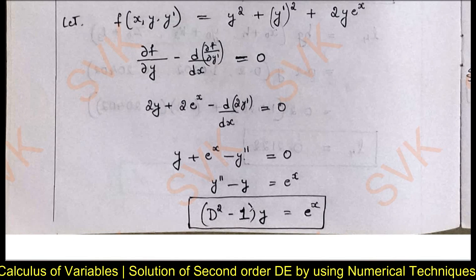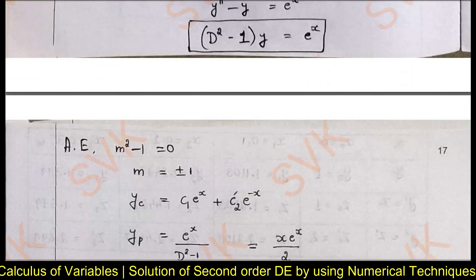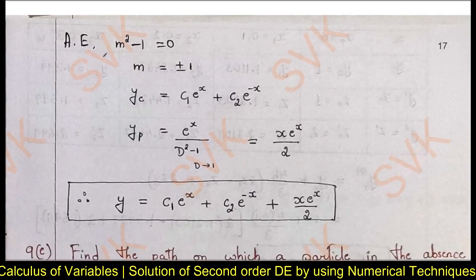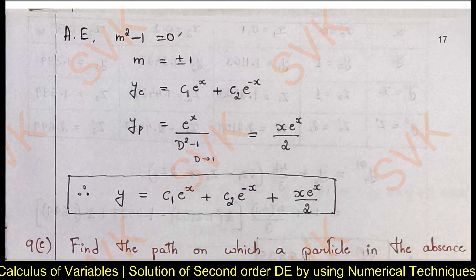We need to solve the differential equation (D² − 1)y = eˣ. Finding the complementary function: the auxiliary equation m² − 1 = 0 gives m = ±1, so yc = c₁eˣ + c₂e⁻ˣ. For the particular integral yp = eˣ/(D² − 1), replacing D by 1 gives yp = x·eˣ/2. The general solution is y = yc + yp.